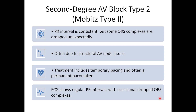For rule number two, the PR interval is constant but can still be longer than normal in some cases. Rule number three: there are extra P waves — the atria are still firing regularly but the signal isn't making it to the ventricles. Rule number five: the P waves and QRS complexes are no longer synchronized. A second-degree type 2 is often due to a structural problem in the AV node or the His-Purkinje system, and can be caused by ischemic heart disease, myocardial infarction, or fibrosis. Mobitz type 2 is much more dangerous because it has a higher likelihood of progressing to a third-degree heart block — treatment requires pacing, not atropine.